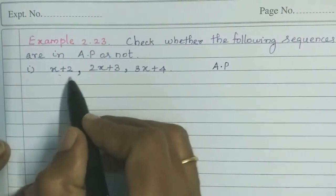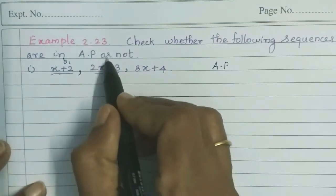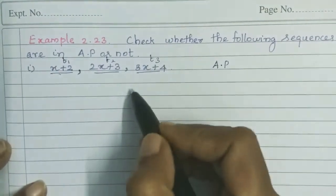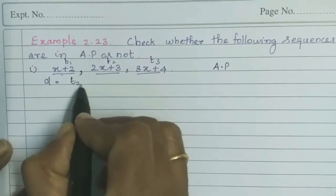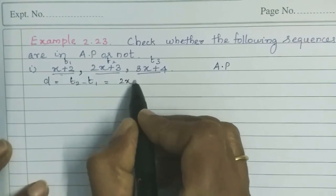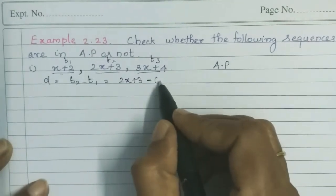Looking at the first sequence, this is the first term T1, this is the second term T2, then third term T3. So let's find the common difference D. First, T2 minus T1. Term 2 is 2x plus 3, minus term 1 which is x plus 2.